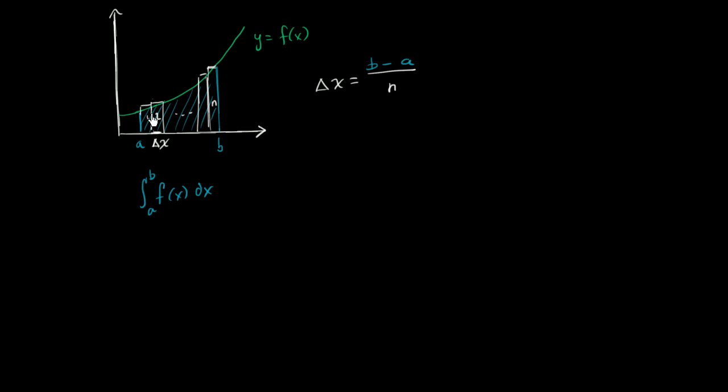If you do this, you can approximate this area using these rectangles as the sum from i equals 1 to n, so you're summing n of these rectangles' areas. The height of each of these rectangles is going to be f(x_i), where x_i is the point at which you're taking the function value to find its height. That could be x_1, x_2, x_3, and so on. You're multiplying that times your delta x.